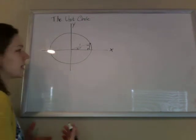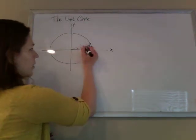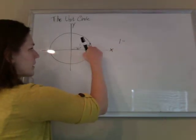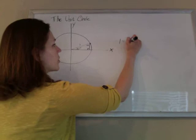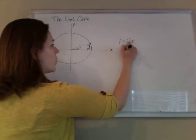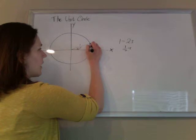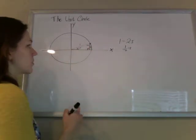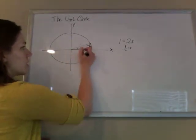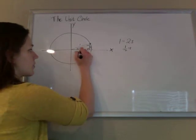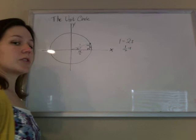For my 30-60-90 ratios, I know that the hypotenuse is twice the length of the short side. So 1 is 2s, which means the short side must be 1/2—the shorter side across from the 30-degree angle. And the longer side is the short side times √3, so this is 1/2√3 or √3/2.